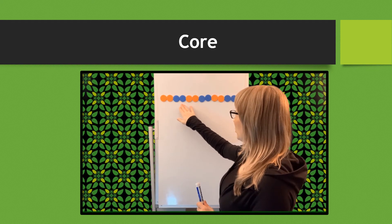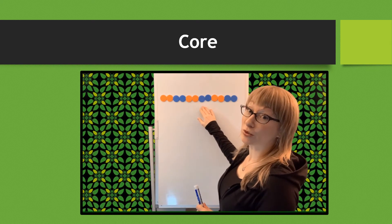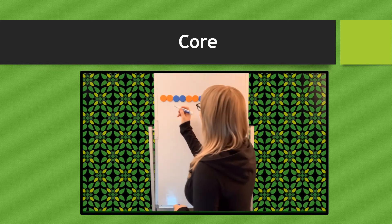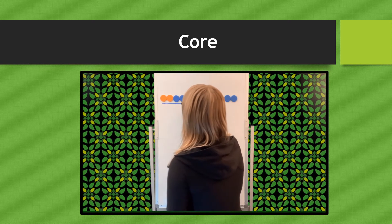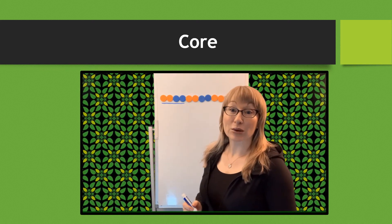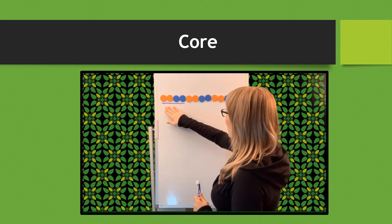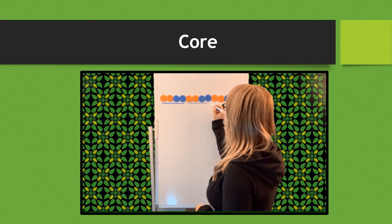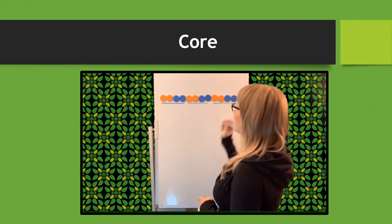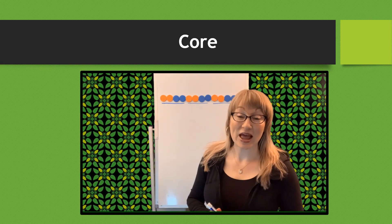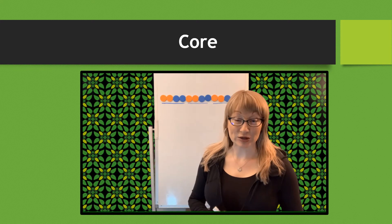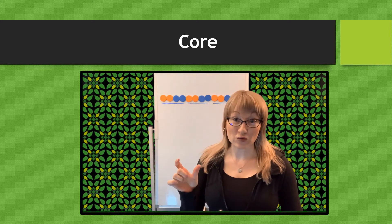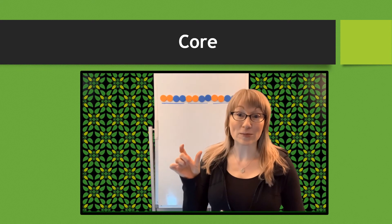I'll show you which part of my pattern is the core. Orange, orange, blue, blue. Orange, orange, blue, blue. Orange, orange, blue, blue. Here is my core: orange, orange, blue, blue — and it is repeating one, two, three times. So I have a pattern, and the core of my pattern is orange, orange, blue, blue. The first four terms are my core. Now look at the patterns coming up and identify the core.